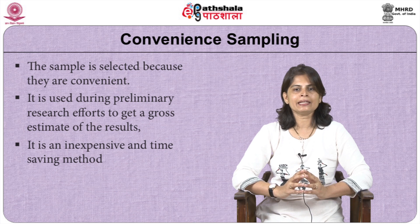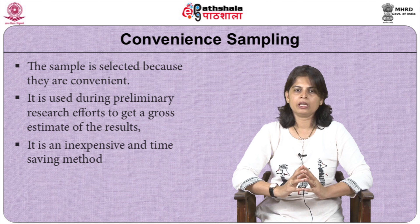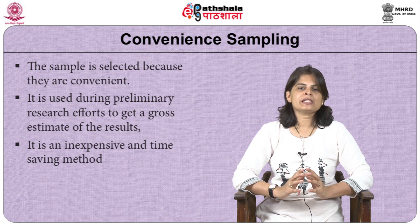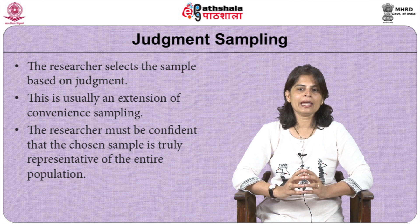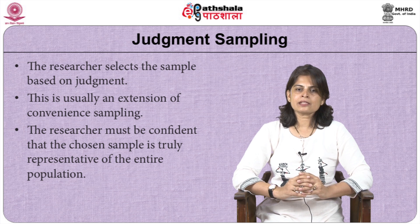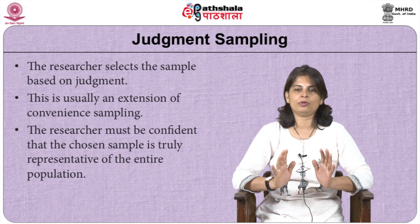The third non-probability method is convenience sampling, where the sample is selected because it seems convenient. It is usually used during preliminary research efforts to get a gross estimate of results, and it is inexpensive and time saving. The fourth is judgment sampling, where the researcher selects the sample based on judgment — an extension of convenience sampling. The researcher must be confident that the chosen sample is truly representative of the entire population.